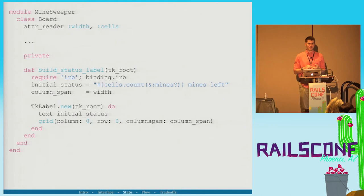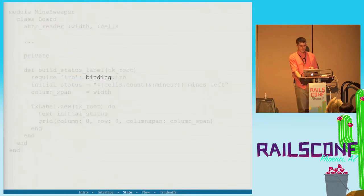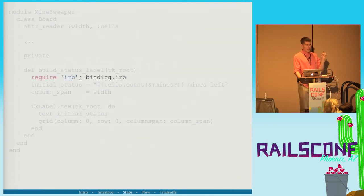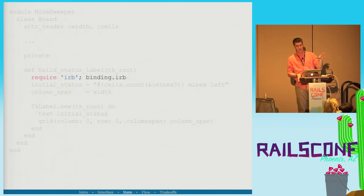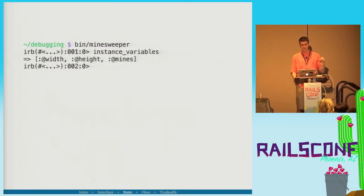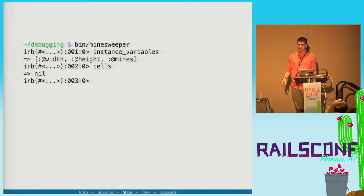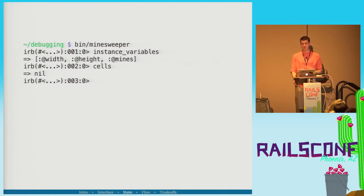binding.irb is brand new in Ruby 2.4. Binding is, inside the current lexical scope, going to tell you the table of local variables and the call stack. When you require IRB, it adds an IRB method to the binding class which drops you into a REPL right at that point in code. You can introspect on the instance variables, determine that cells is nil, and get all that information very quickly.